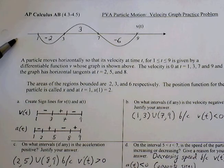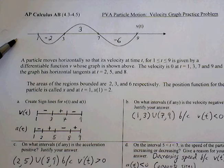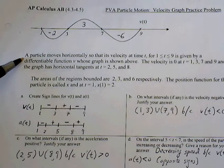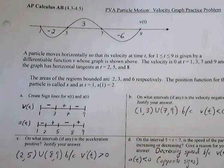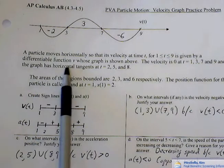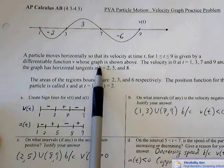All right, this is the PVA particle motion velocity graph practice problem for sections 4.3, 4.5. A particle moves horizontally so that its velocity at any time between 1 and 9 is given by the differential function v, and the graph is shown above.